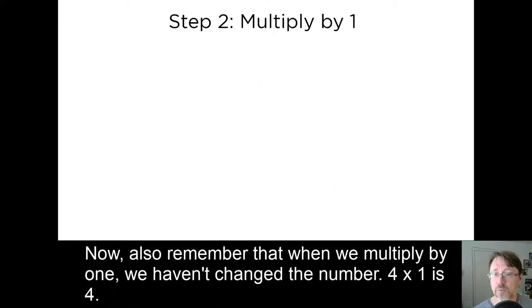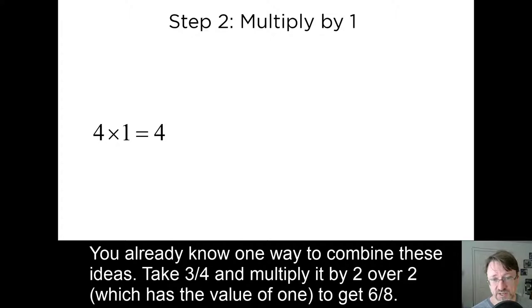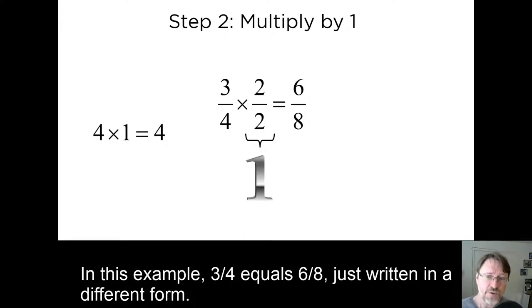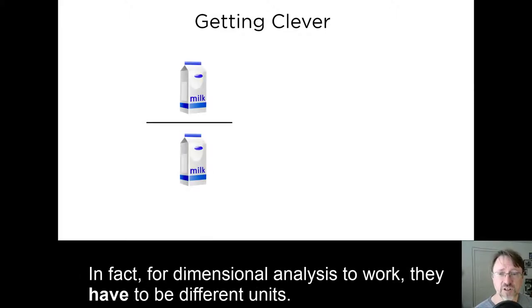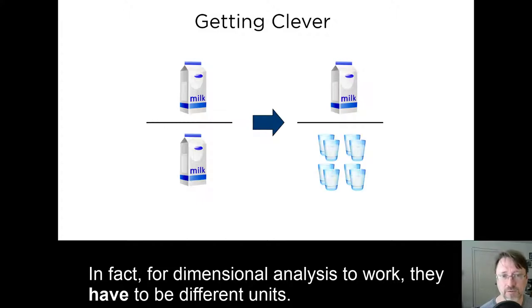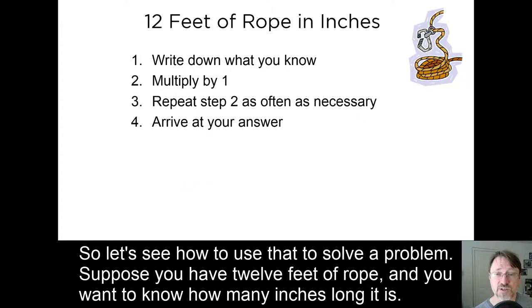Now also remember that when we multiply by one, we haven't changed the number. Four times one is four. You already know one way to combine these ideas. Take three-fourths and multiply it by two over two, which has the value of one, to get six-eighths. In this example, three-fourths equals six-eighths, just written in a different form. Now for the clever part. The numerator and the denominator do not have to be in the same units. In fact, for dimensional analysis to work, they have to be in different units.